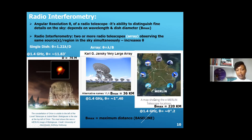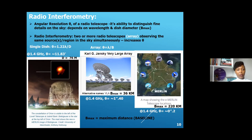When I talk about the maximum baseline, that is the maximum distance between any two telescopes in a given array. Another very important aspect in radio astronomy is the angular resolution of a radio telescope — the ability to distinguish or find a difference between sources or objects in the sky. This usually depends on the wavelength of the observation and the dish diameter; in the case of an array, the maximum baseline.